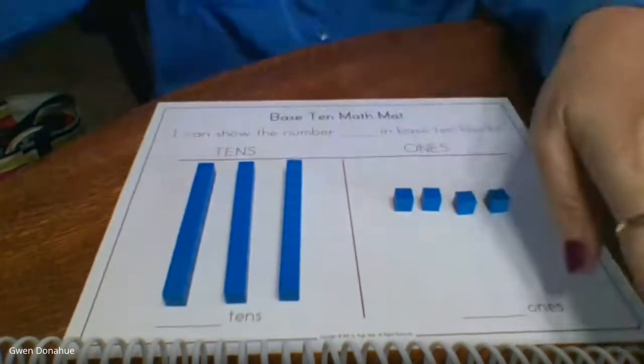Isn't that a lot faster than having to count every single one by itself? I think so too. So remember, these are called base 10 blocks and we'll be using them again tomorrow. Practice counting by tens.